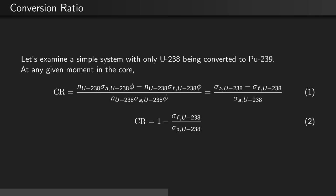Therefore, we can define the conversion ratio as being 1 minus the ratio of the fission cross-section of U-238 to the absorption cross-section of U-238.